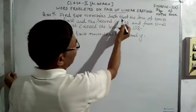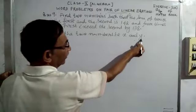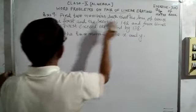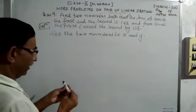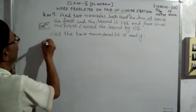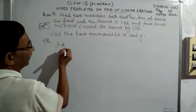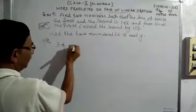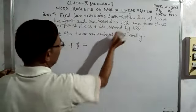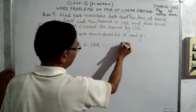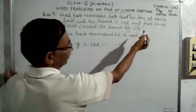Now here is the first condition: the sum of thrice the first and the second is 142. The first number is x and the second number is y. Thrice the first means x multiplied by 3, which is 3x. So according to the first condition, we write: 3x + y = 142. This is our Equation number 1.